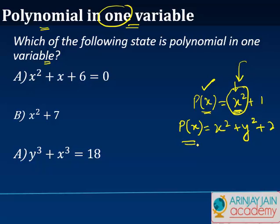On the other hand, if you look at the second one, here, depending on what is the value of x and what is the value of y, the value of the polynomial will change. So there are two variables as such in the second polynomial.